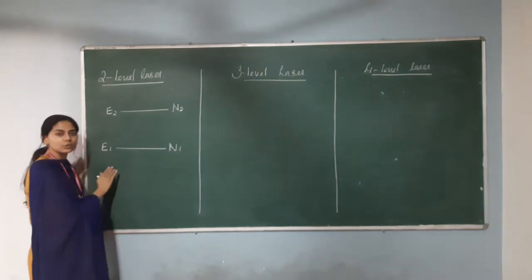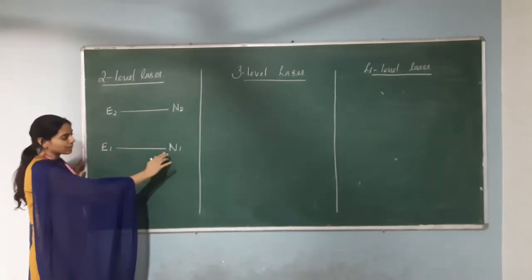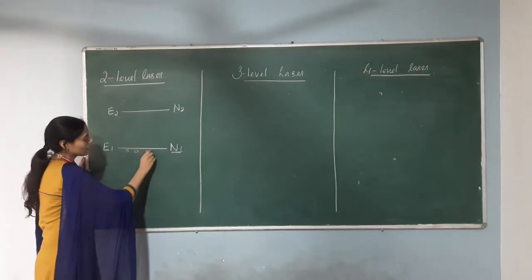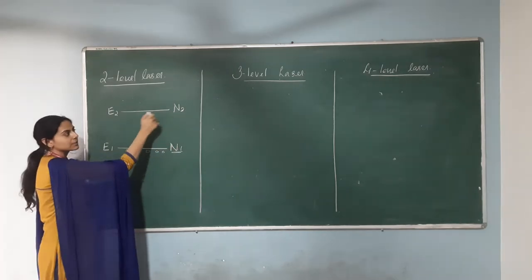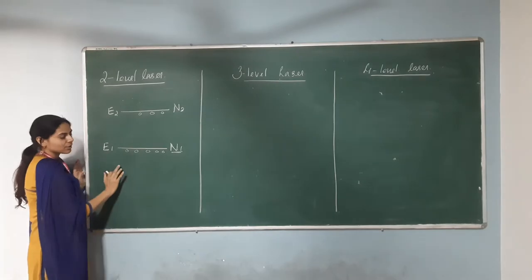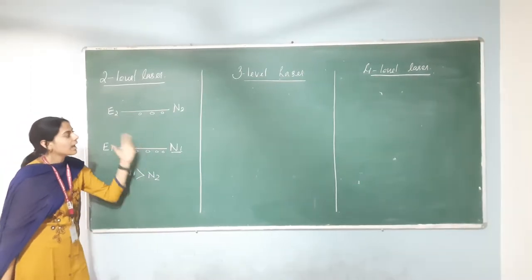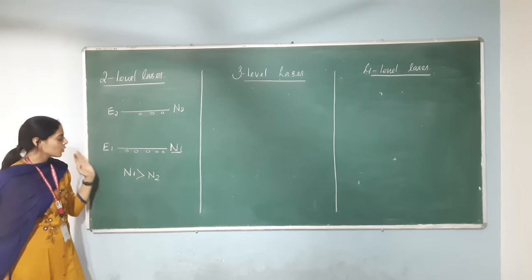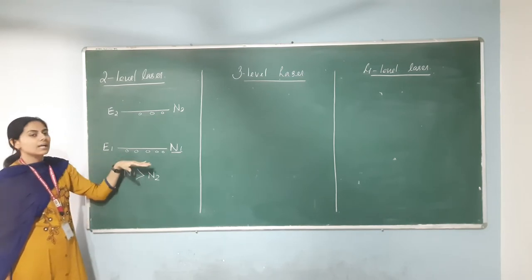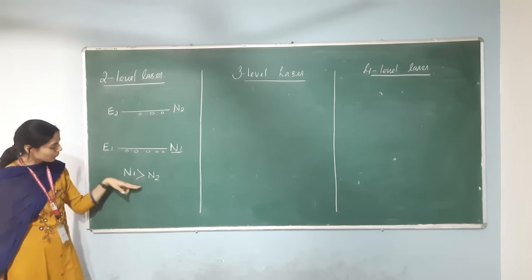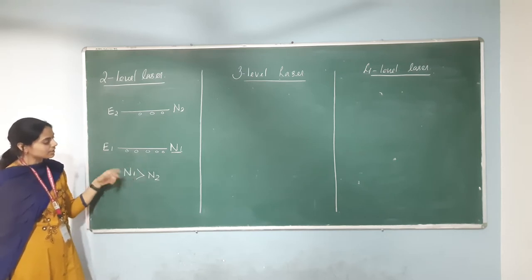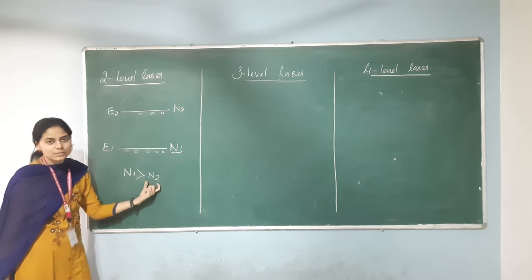In a two level pumping scheme, we have only two energy levels, E1 and E2. The population on the first energy level is N1 — these are the number of atoms. The population on the second energy level has some atoms, but always the population on the ground state E1 is more than on the excited state E2.